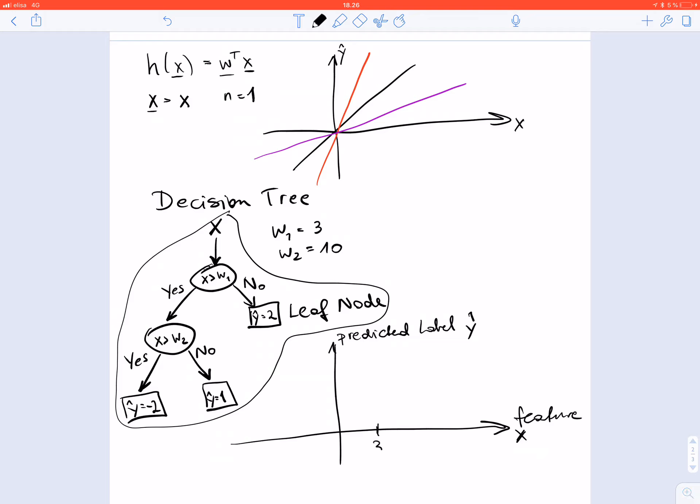So here there's something happening. If it's not larger than 3, so smaller or equal than 3, we end up in this leaf node and set y hat equal to 2. This is this segment here. Then if x is larger than w1 or 3, and we have another important point at w2 which is 10.